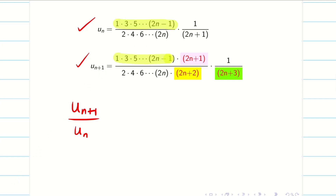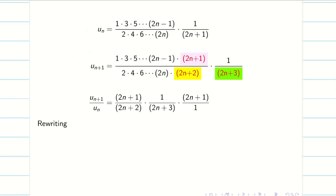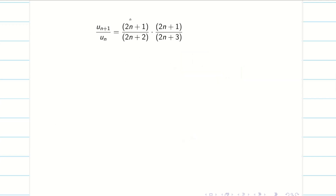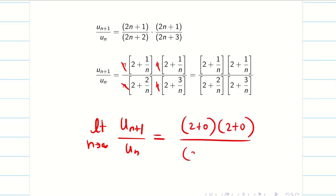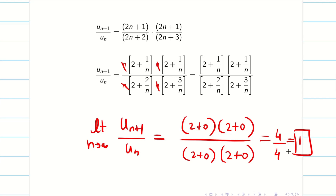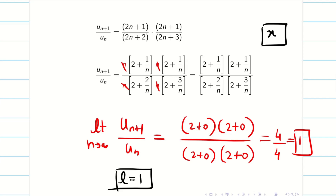We have to find u_(n+1) divided by u_n. We can see that the yellow terms and green terms cancel each other out, leaving the remaining data. Rewriting, we have u_(n+1)/u_n in simplified form. Next, we apply the limit as n → ∞. Taking n in common from all four terms and cancelling, we get: limit of u_(n+1)/u_n = (2+0)(2+0) / ((2+0)(2+0)) = 4/4 = 1. Oh! Ratio test fails when l = 1, so ratio test fails here.